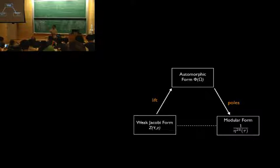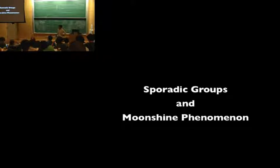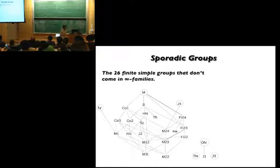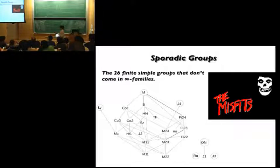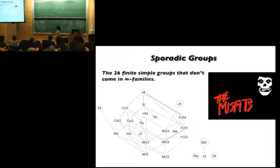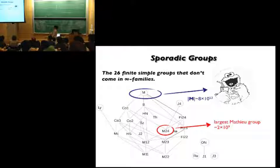Now I'm going to switch gear and talk about sporadic groups. There are 26 finite simple groups that don't fall into infinite families — they're the misfits. This diagram shows the subgroup structure of these 26 sporadic groups. There are two famous ones: the biggest is the monster, which is the largest and contains the whole 'happy family' — that's actually a technical term — and its order is around 10 to the 54.